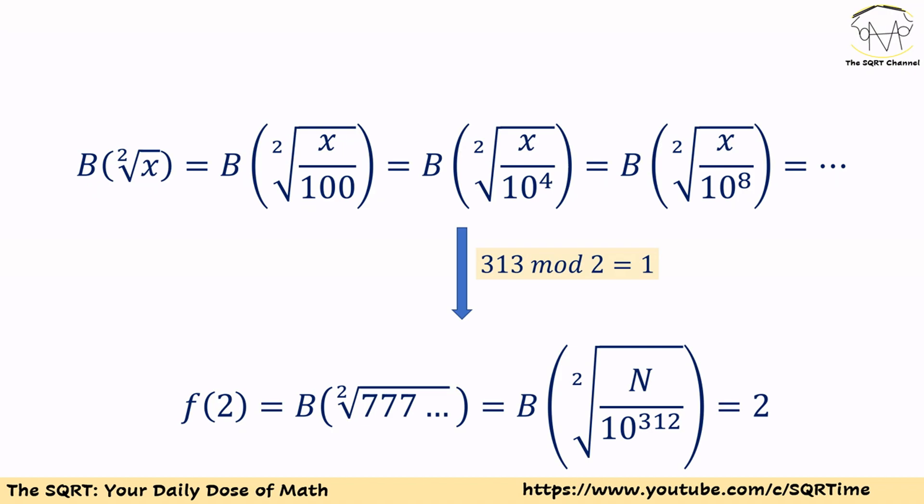We need to find the maximum value we can divide x by. For the square root, since 313 mod 2 is 1, the leading digit of the square root of N equals the leading digit of the square root of N over 10^312, which is basically 7-point-something. The square root of 7-point-something is 2-point-something, so the leading digit is 2.